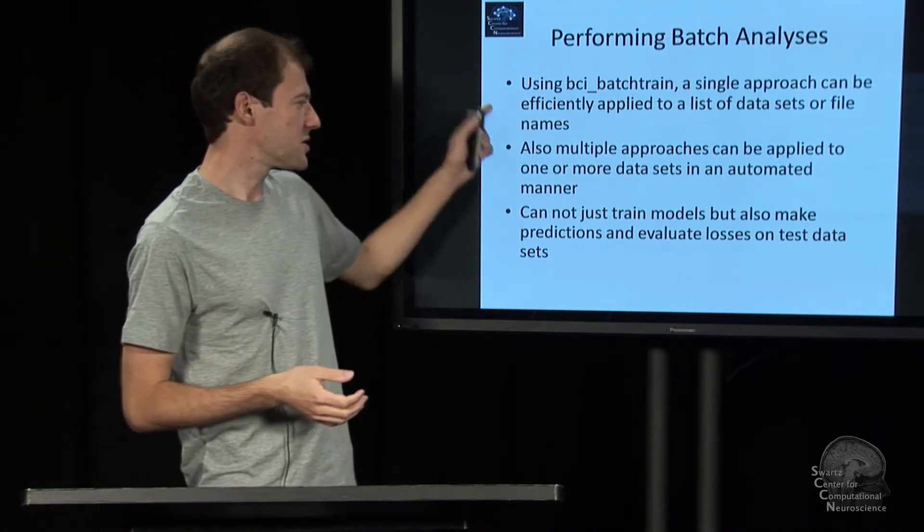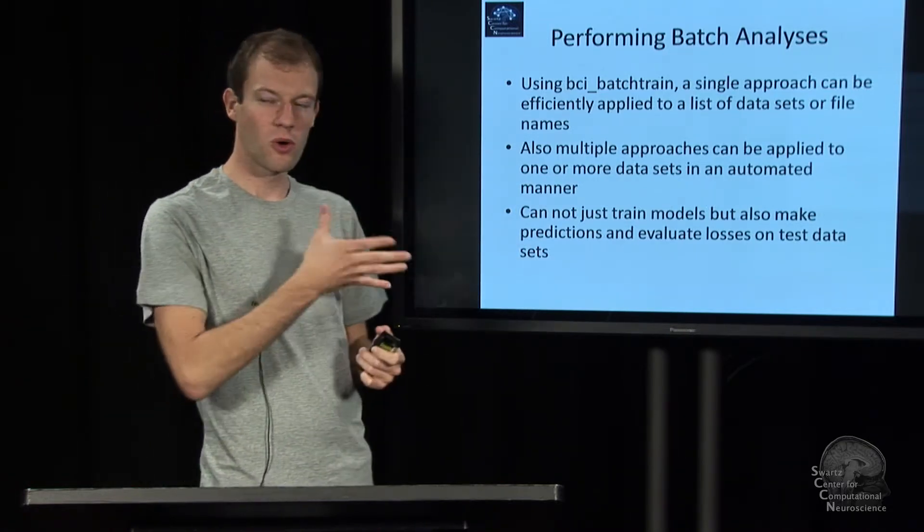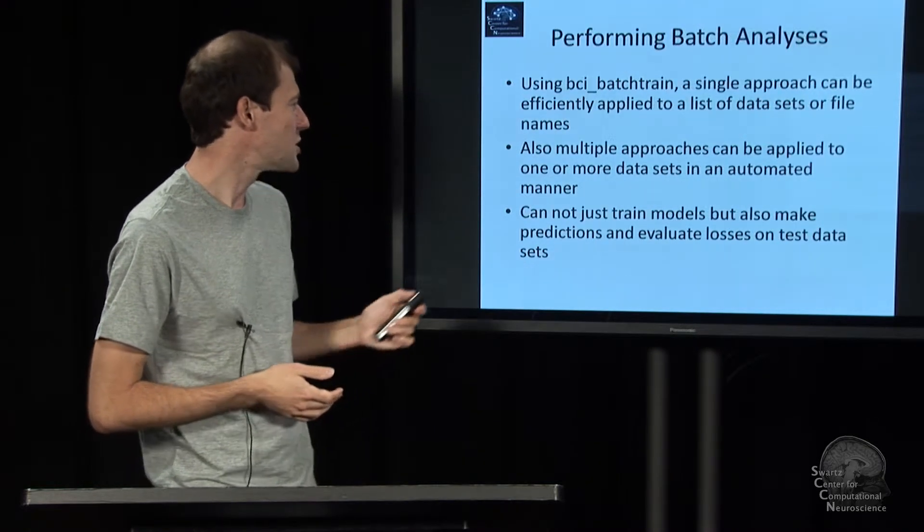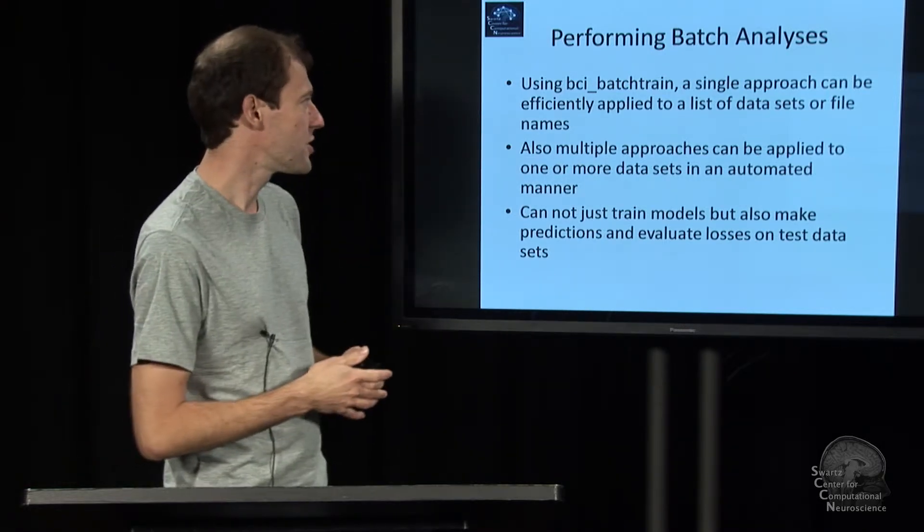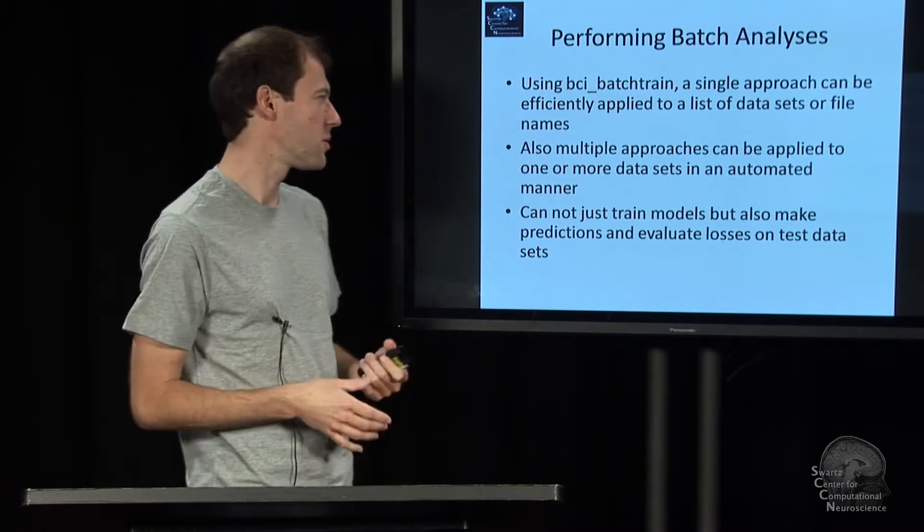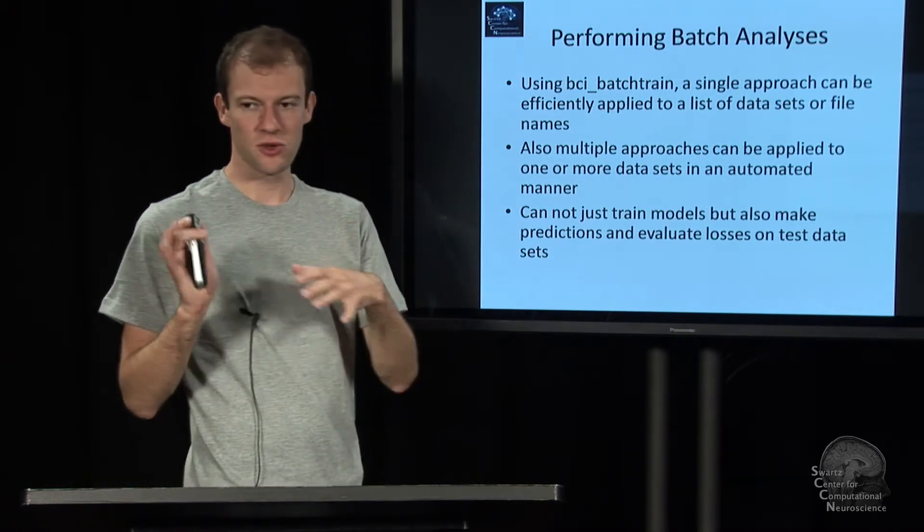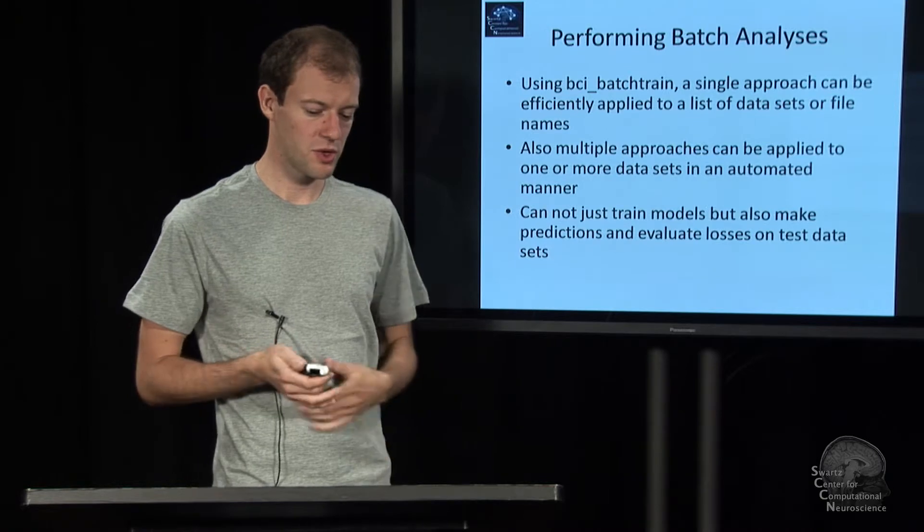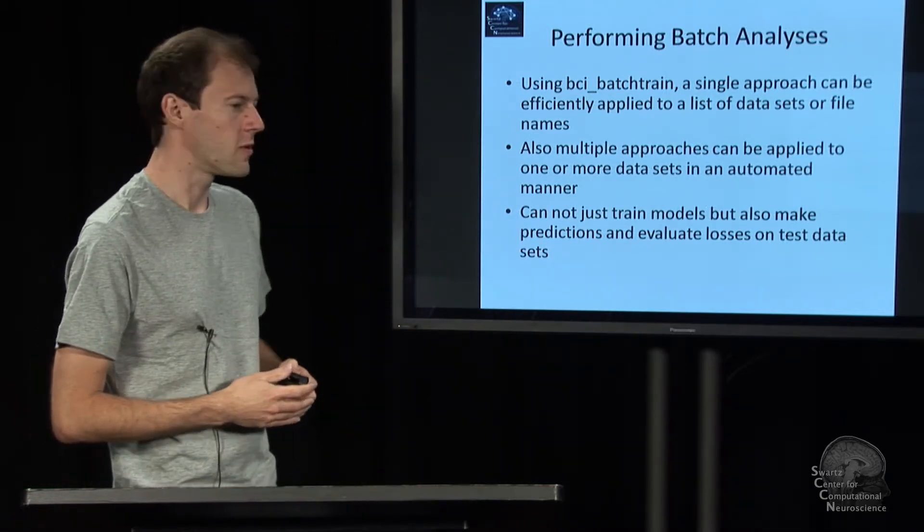There is this batch analysis function, which is a behemoth of features in a sense. I don't think I have too much info on this here on the slides. There's just too much detail. But it's very well documented. And you can use this to test one approach on multiple datasets, multiple approaches on multiple datasets, and so on. It can not just train and do cross validations, but it can also predict using bci_predict and so on. So it really wraps all the other functions and interfaces in one.